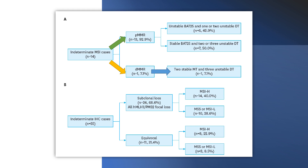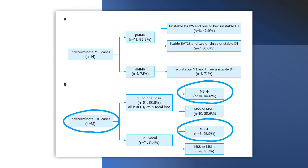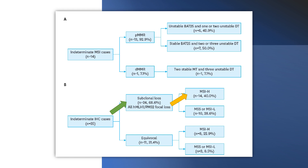In the one case of dMMR, PCR-based MSI testing revealed 2 stable mononucleotides and 3 unstable dinucleotides. Of the 35 indeterminate immunohistochemistry cases re-examined, 22 were MSI-high and 13 were MSS or MSI-low. Subclonal loss was found in 24 cases, 14 of which were MSI-high, and was observed only in MLH1 and PMS2. Even after retesting, equivocal MMR immunohistochemistry results were observed in 11 cases, of which 8 were MSI-high.